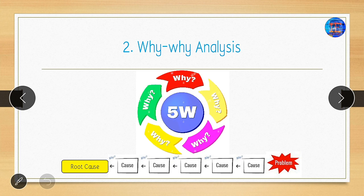The second method is 5-Why analysis. If we have any problem, we ask why the problem happened — we get one cause. Then we ask why again and find a second cause. We need to do this at least five times. After doing this, we will definitely get the root cause of the problem.